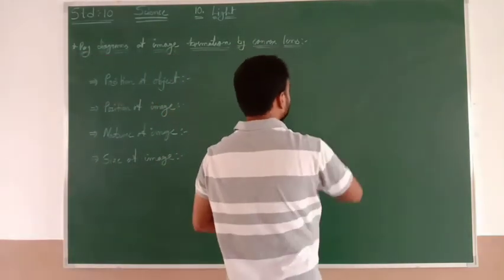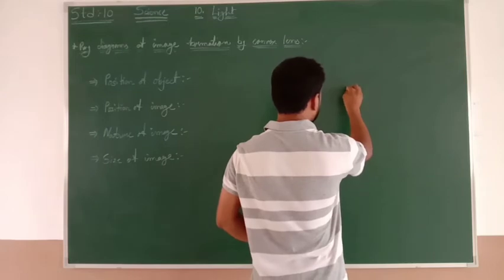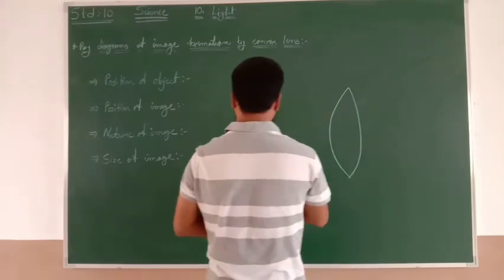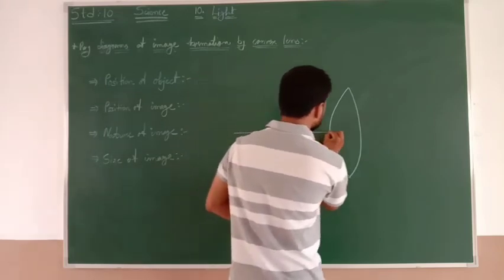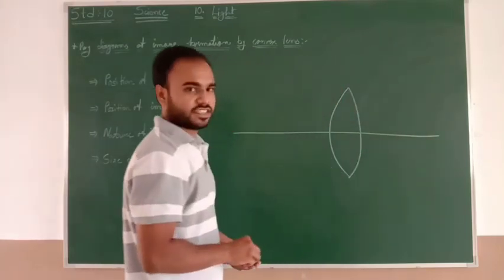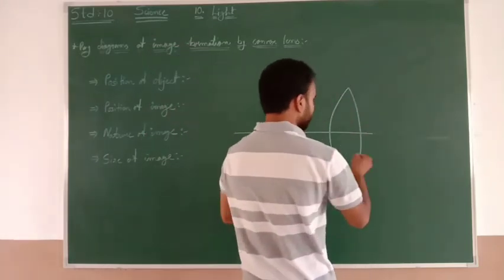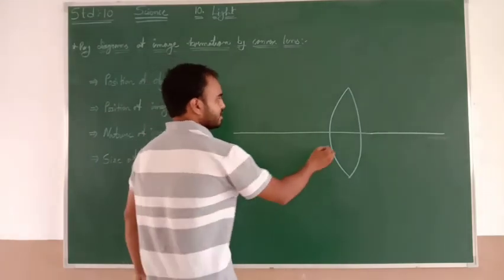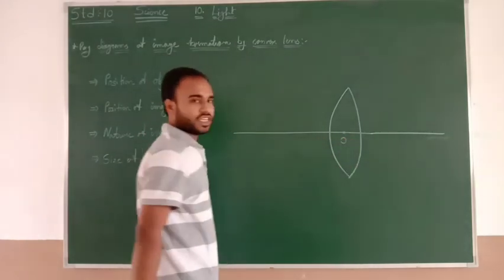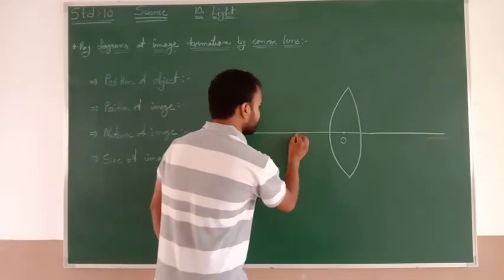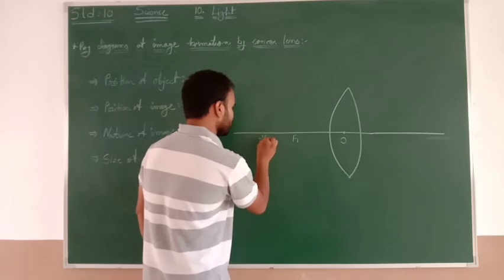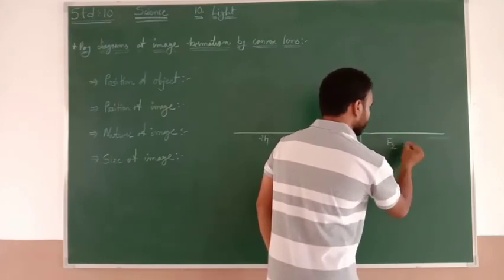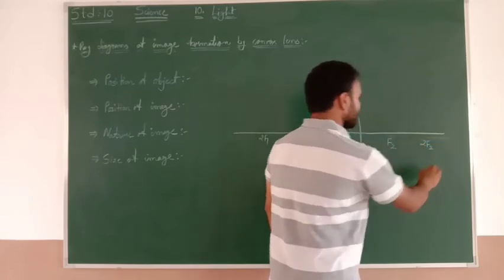First of all we draw the convex lens. We have drawn the convex lens, then the line passing through the optical center or the two centers of the outer sphere — it is known as the principal axis. Center of the lens is known as capital O, that is optical center. On the left side, principal focus F1 and center of curvature 2F1. On the other side, principal focus F2 and center of curvature 2F2.